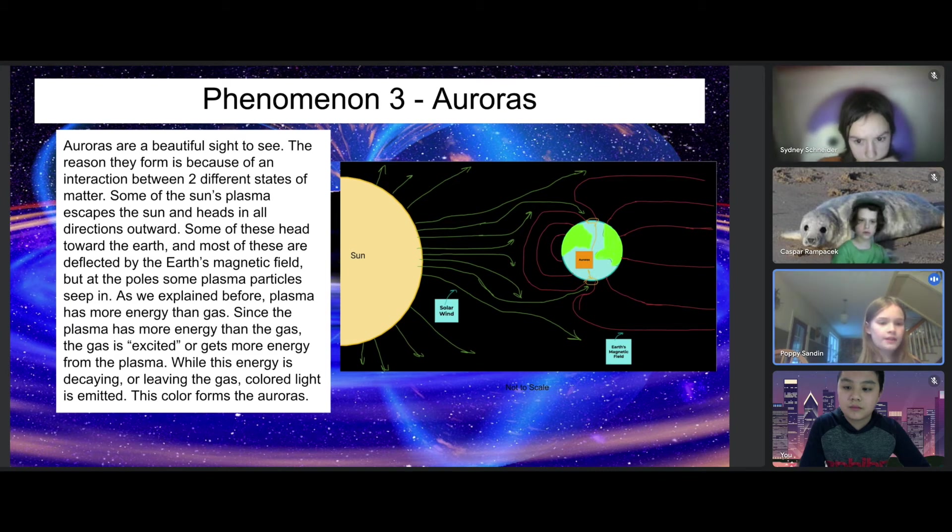As explained before, plasma has more energy than gas. When the plasma has more energy than the gas, the gas becomes excited or gets more energy from the plasma. As this energy decays or leaves the gas, colored light is emitted. This color forms the auroras.